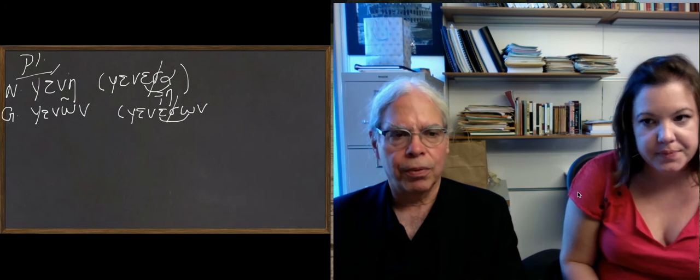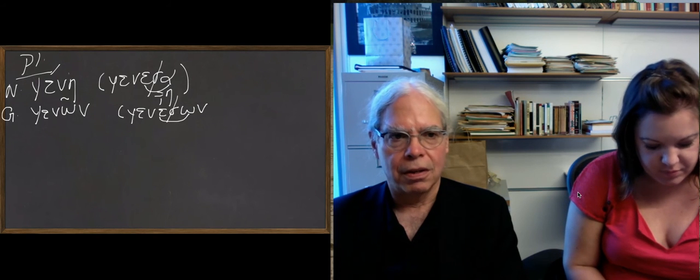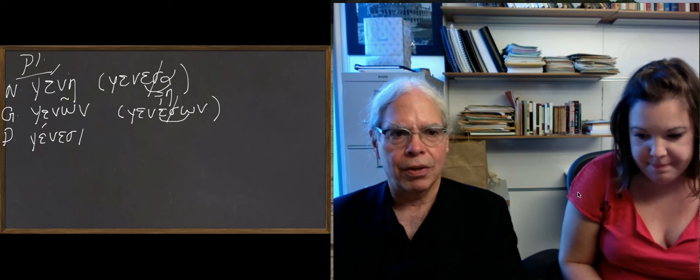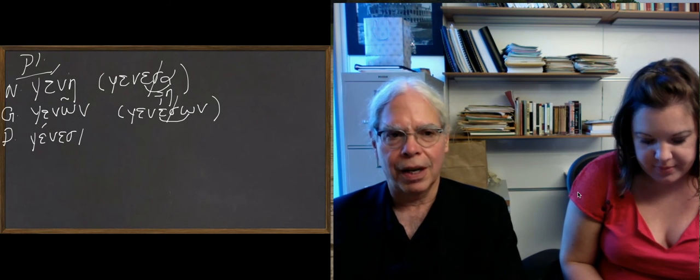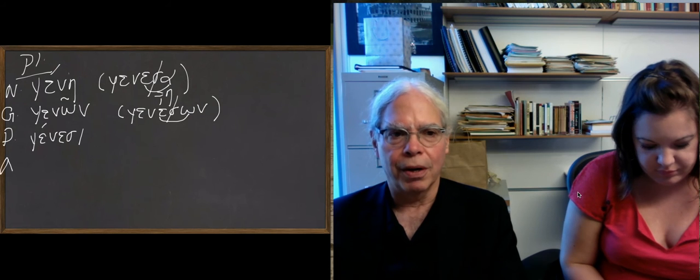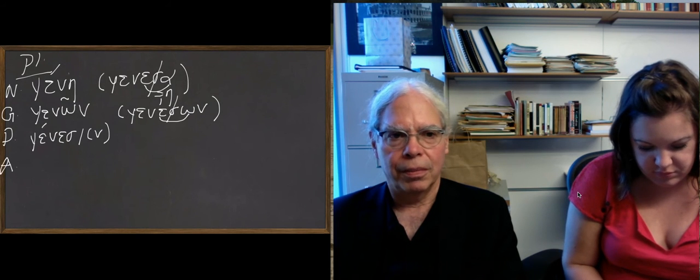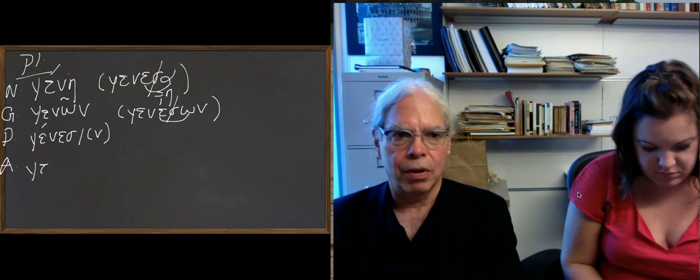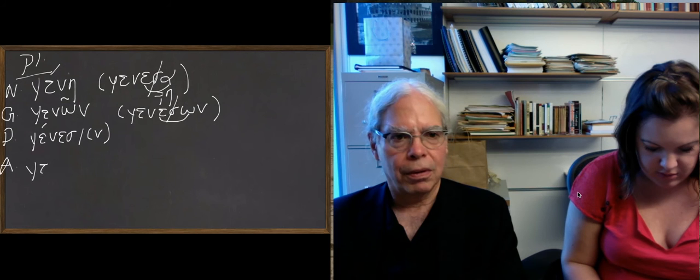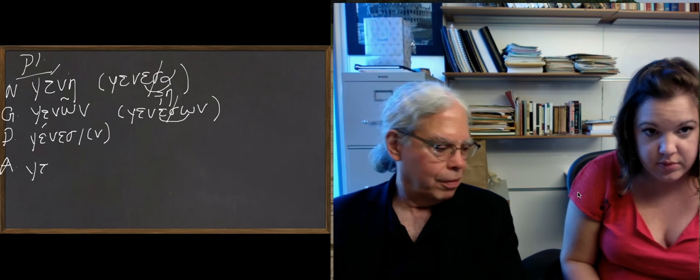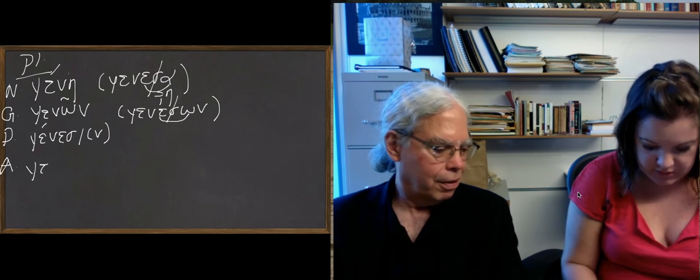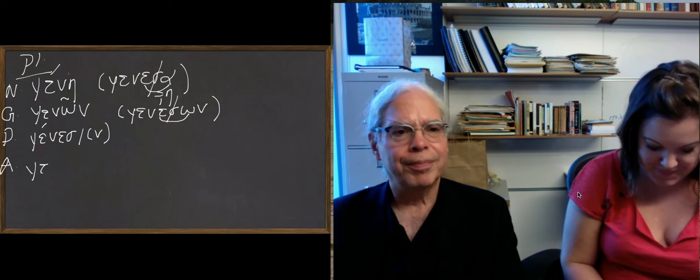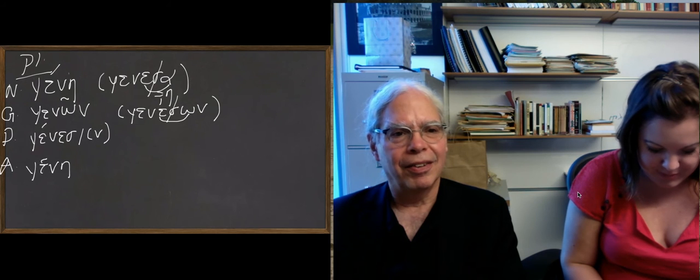And then the dative plural is genesi, with an s that survives between the vowels. You can have a nu moveable there at the end of genesi. And then the accusative plural, because it's the same as the nominative, is gene.